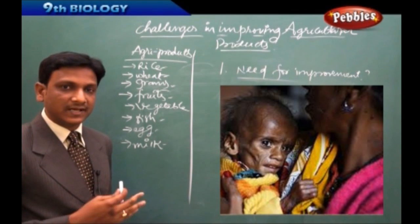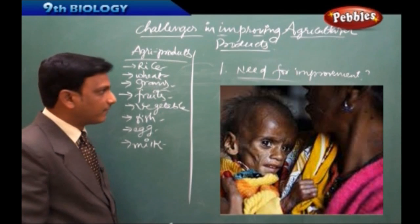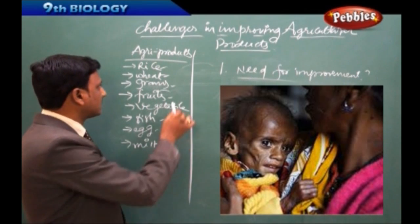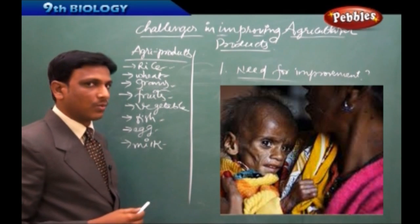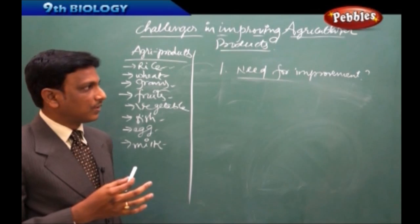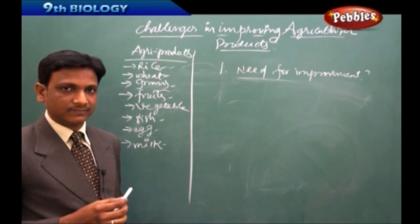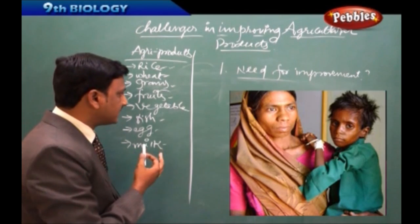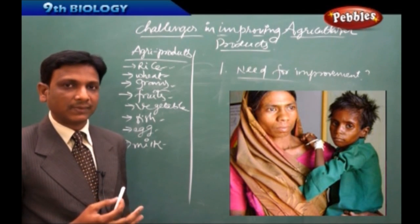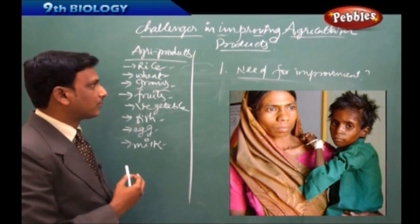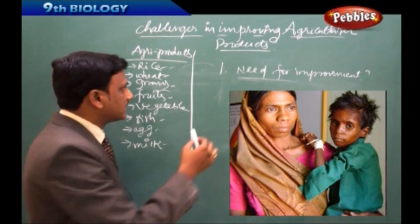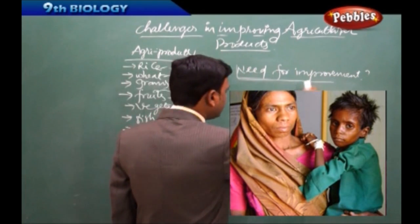When prices go high, people who cannot afford to buy different agricultural products may depend on only one or two products, which can lead to malnutrition. So as population grows and demand for food products increases, the production quantity must be increased to supply agricultural products to the growing population.